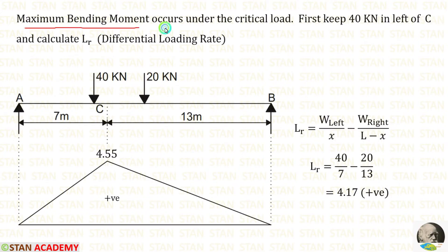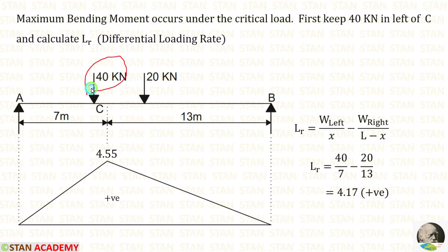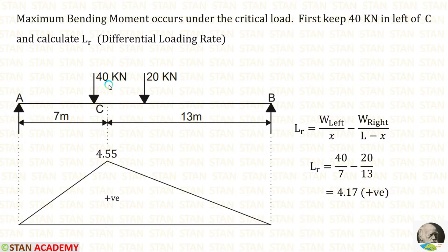The maximum bending moment occurs under the critical load. Let us assume the 40 kN load is the critical load because it has the higher value. First, we keep the 40 kN on the left of C and find the differential loading rate LR. Then we keep the 40 kN on the right of C and again find LR. If there is a change in sign of LR, our assumption is correct. If there is no change in sign, then 40 kN is not the critical load and we try the other load.